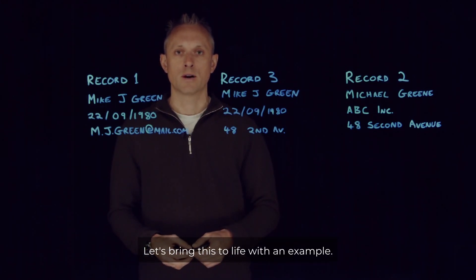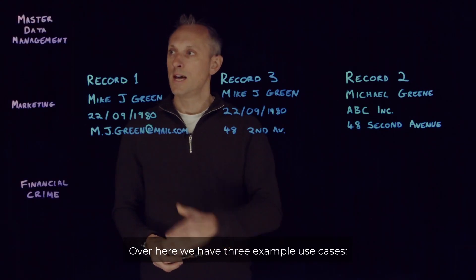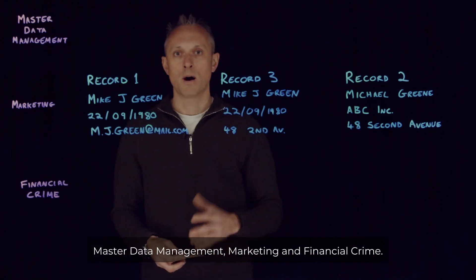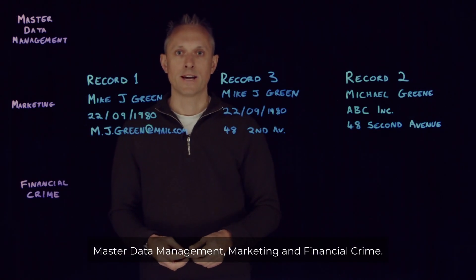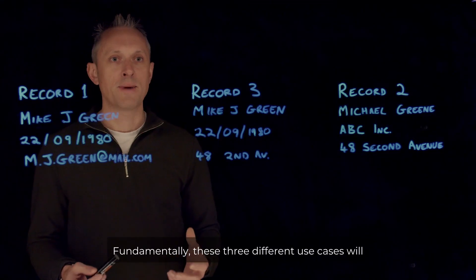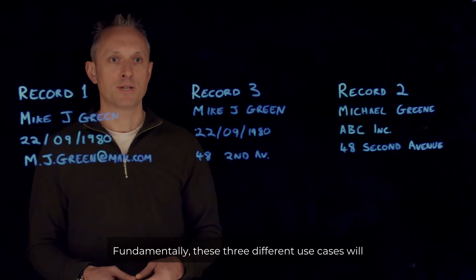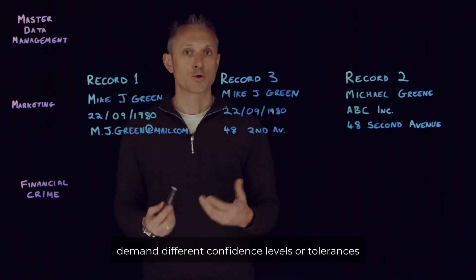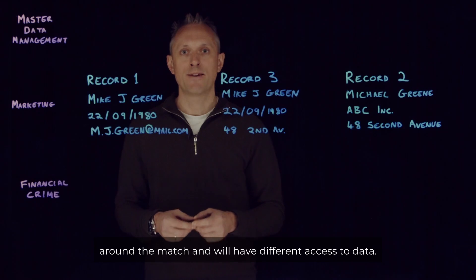Let's bring this to life with an example. Over here we have three example use cases: master data management, marketing, and financial crime. Fundamentally, these three different use cases will demand different confidence levels or tolerances around the match and will have different access to data.